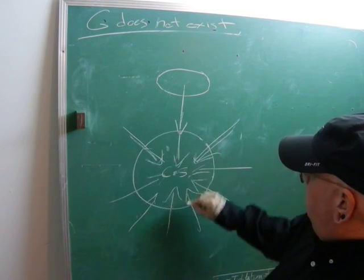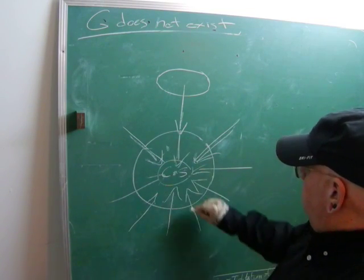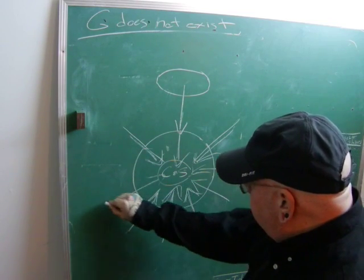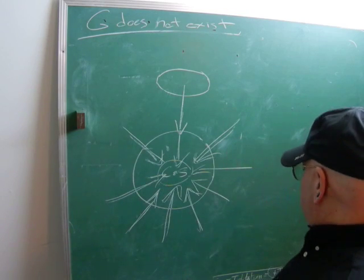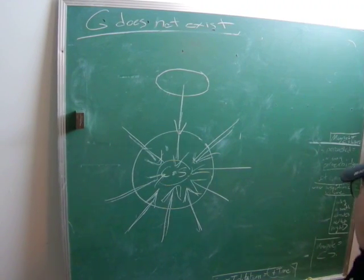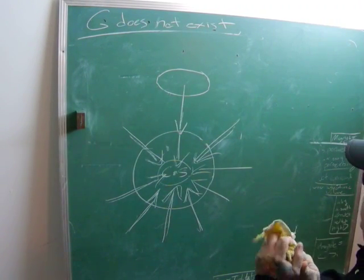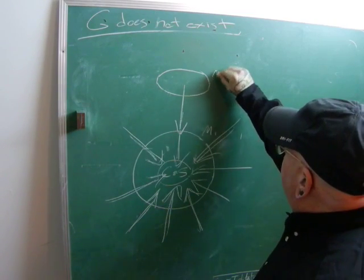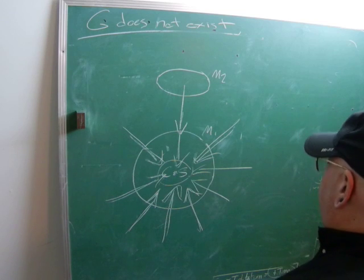Say this is the Earth. We have counter space here, obviously. Gravity is just nothing other than an extrapolation of counter space. So, here we have mass 1 and mass 2. So, what is anti-gravity?